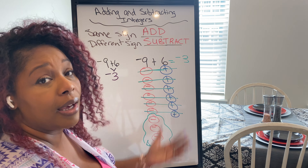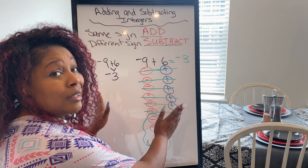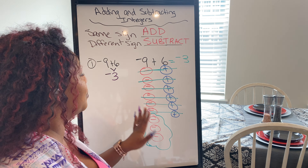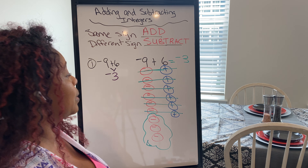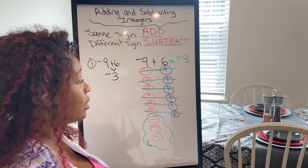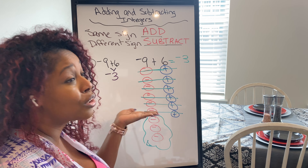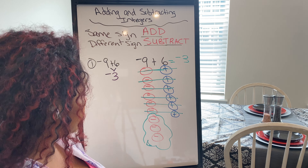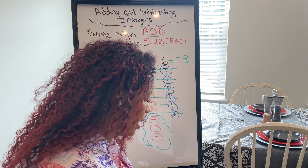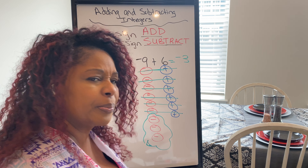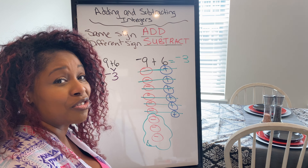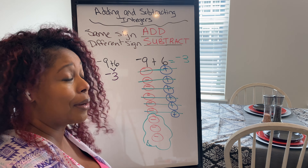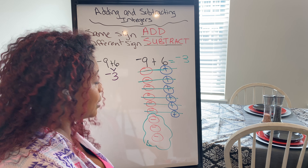So you have two ways — the rule method and the chip/zero-pair method — and also the number line way from the first video. Personally, I think these two are the easiest and least complicated, because we don't want to overcomplicate math. That's the end of this video — next video we'll probably be getting into fractions and decimals. I'll see you guys in the next video.